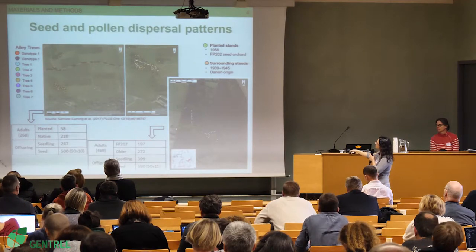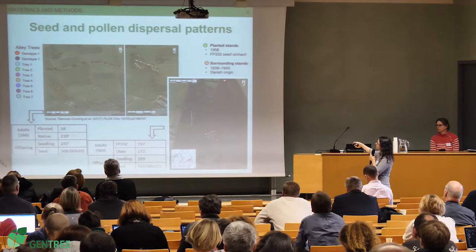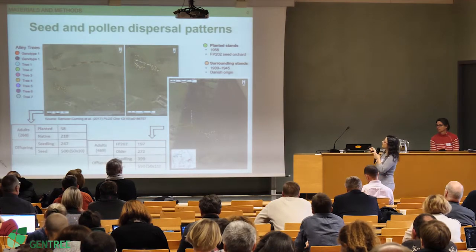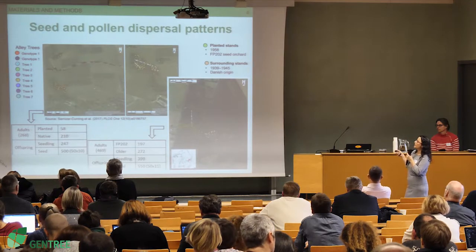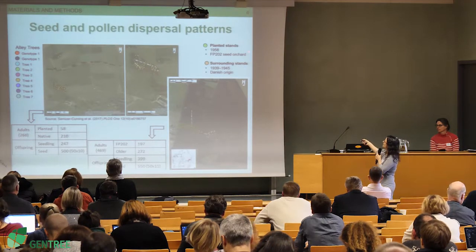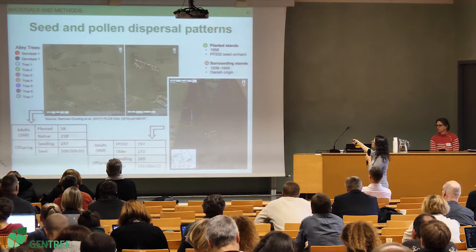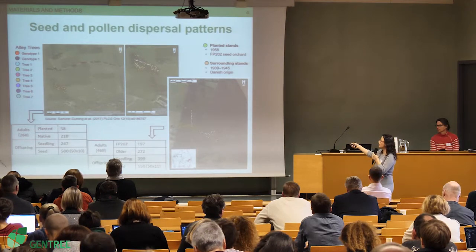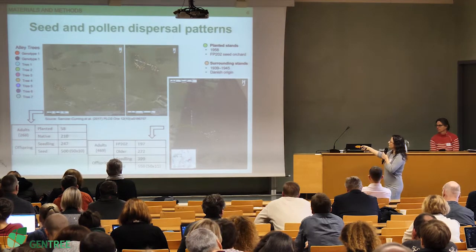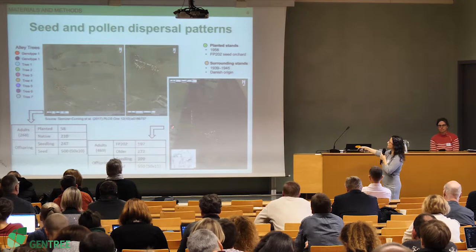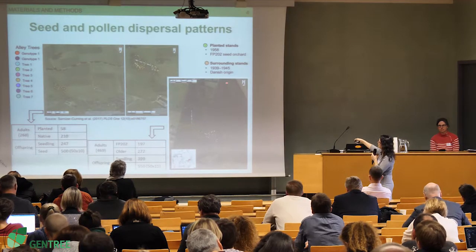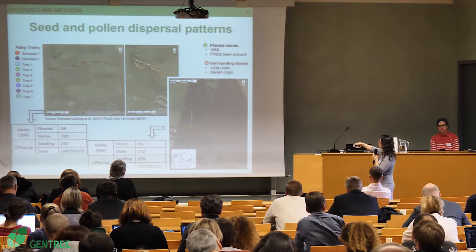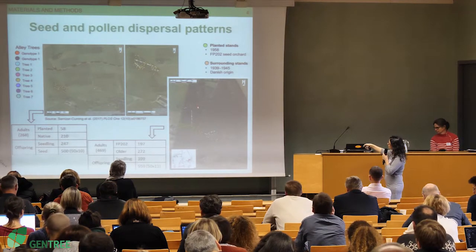The green dots represent the planted stands. They were established in 1958 from precisely eight clones grown in a seed orchard, making them half-sibs through open pollination — so we know the origin of this material. The surrounding orange stands are putatively of Danish origin and according to records have been there since 1939 to 1945.